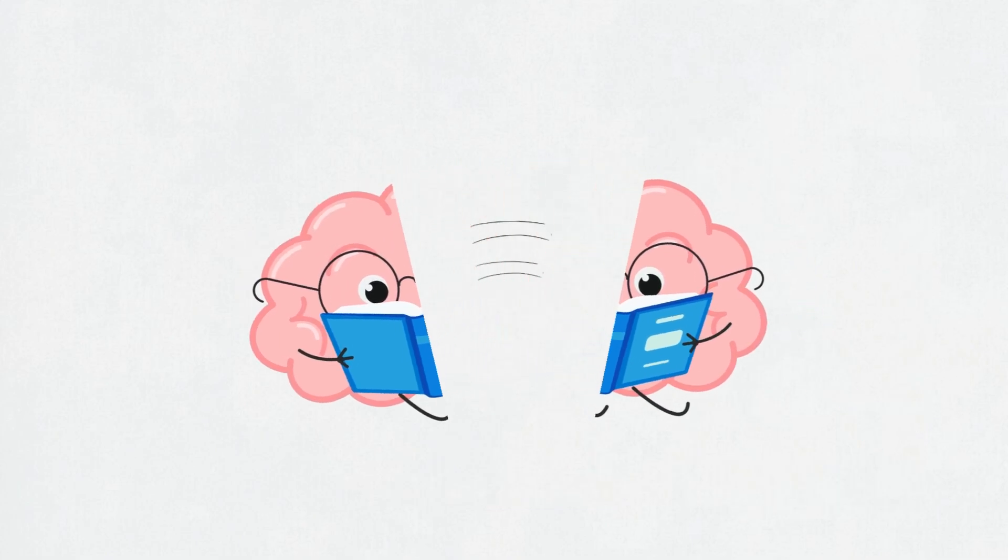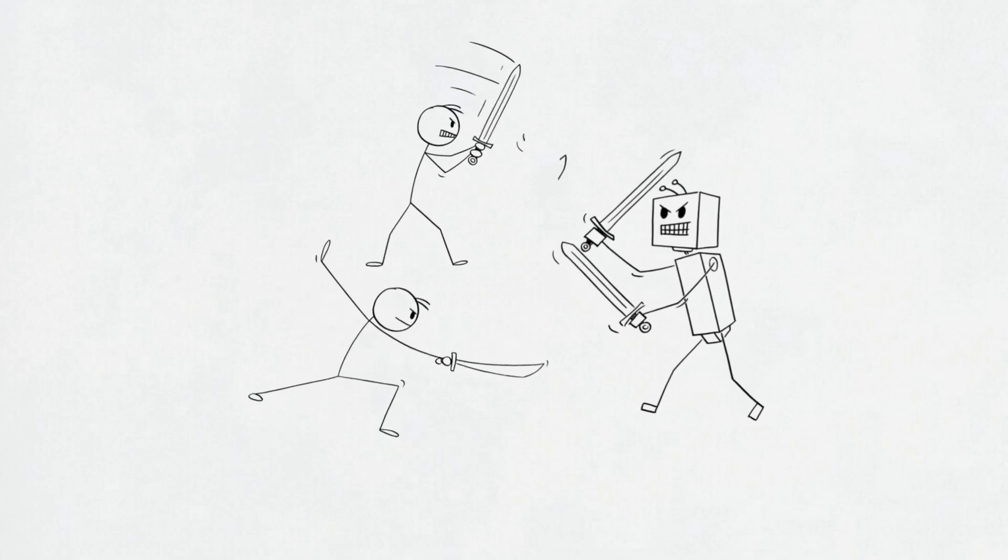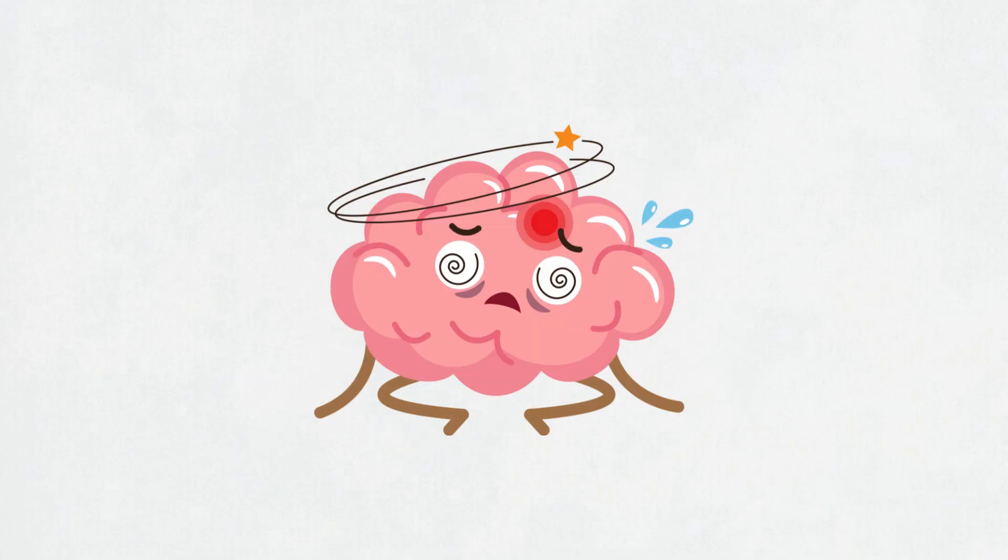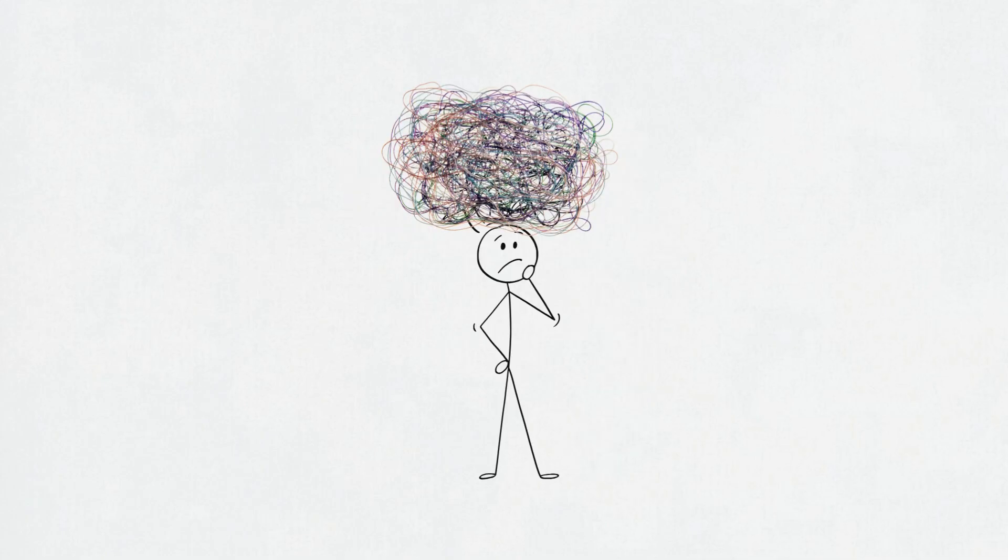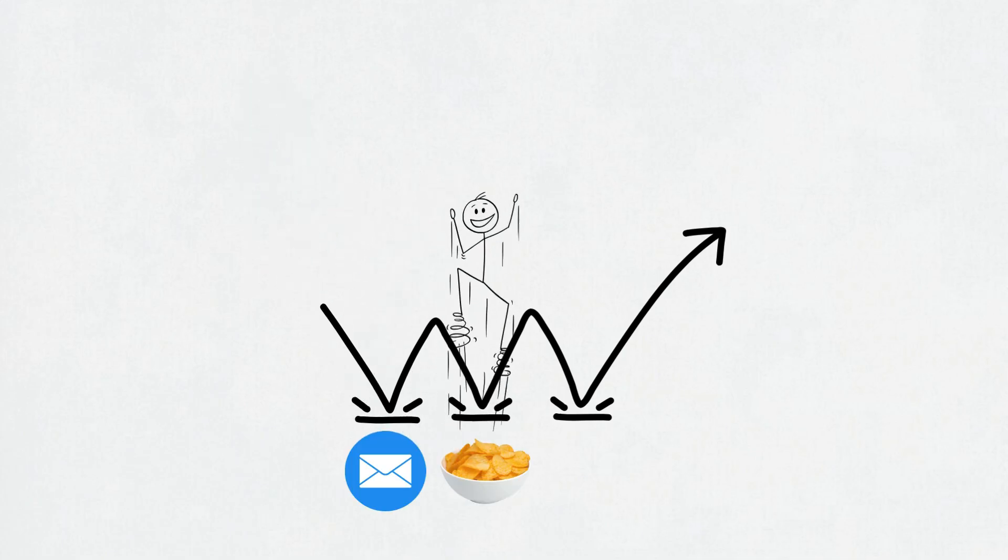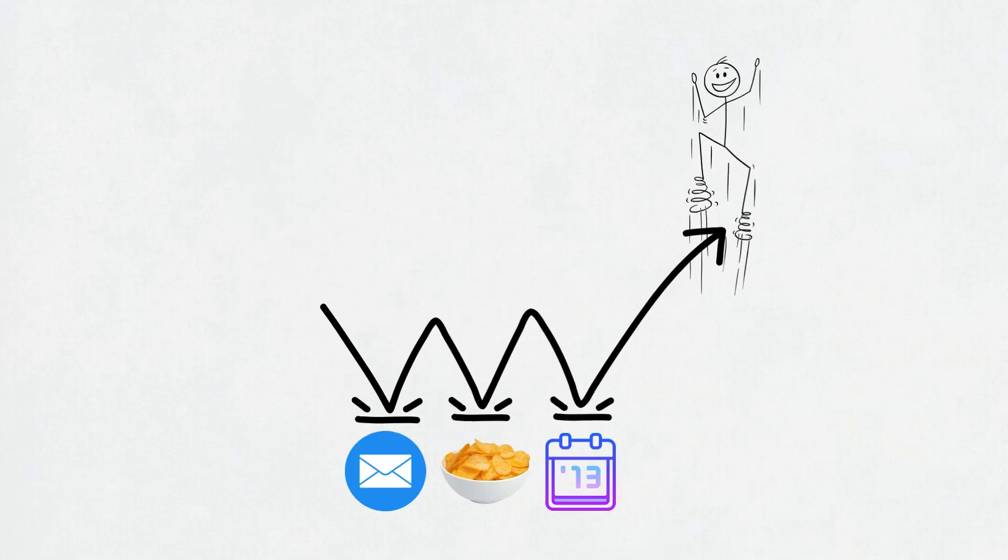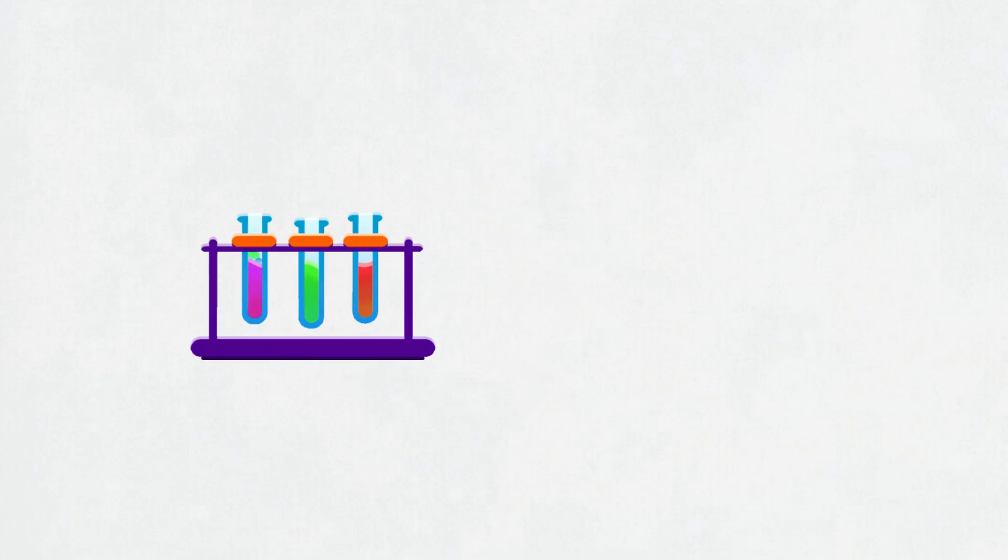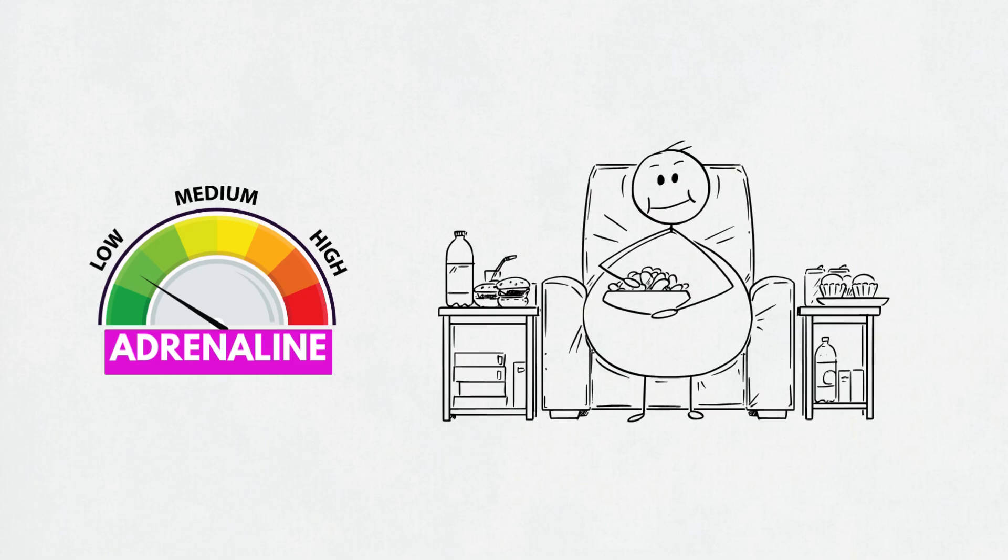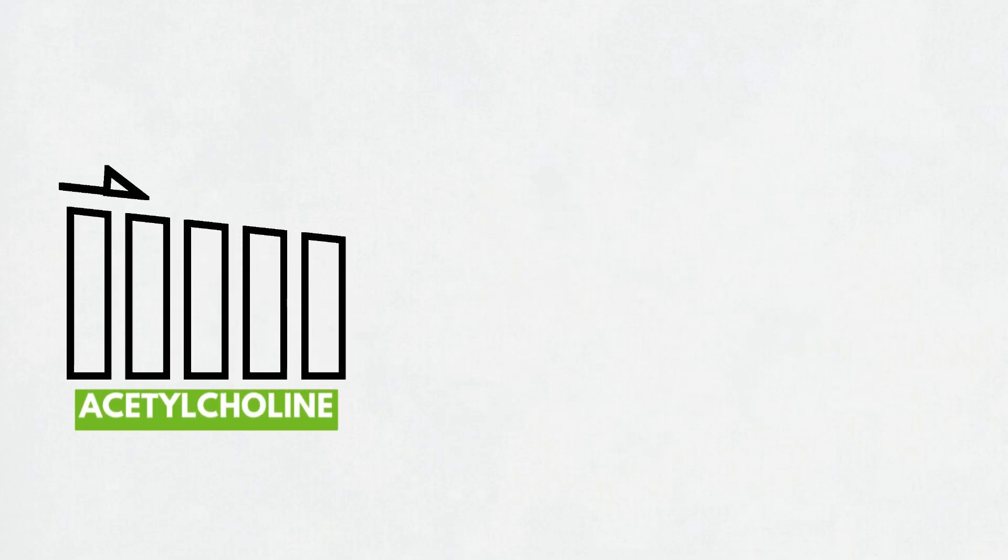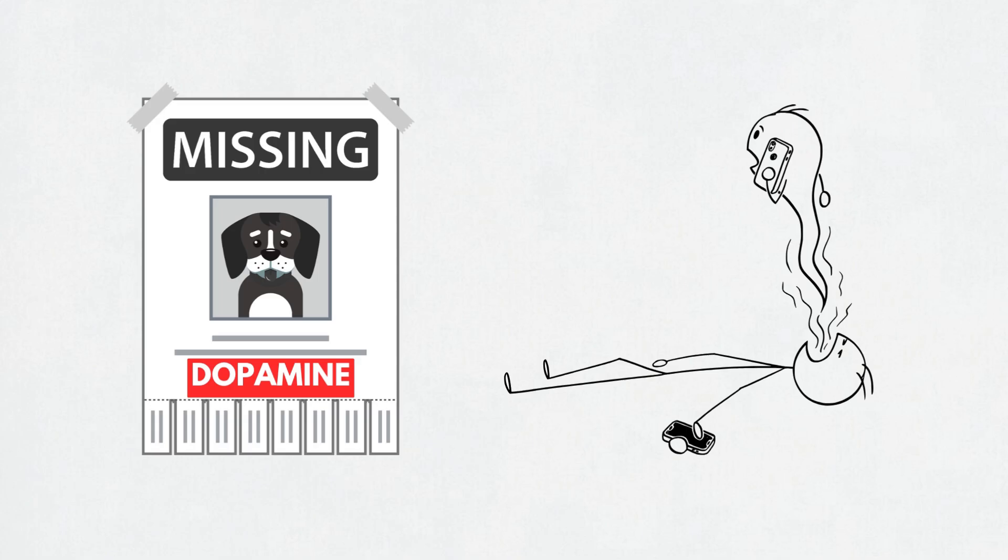So what happens when it all falls apart? Where brain systems stop playing nice, focus doesn't just fade, it face plants. The FPN gets lazy. The DMN throws a daydream party. Suddenly, you are deep into raccoon videos. Your mind goes full chaos mode, jumping between emails, snacks, and your 2013 regrets. Nothing gets done. Everything feels messy. And your brain chemicals? Total drama. Too little adrenaline? You feel like a couch cushion. Too much. You're vibrating.